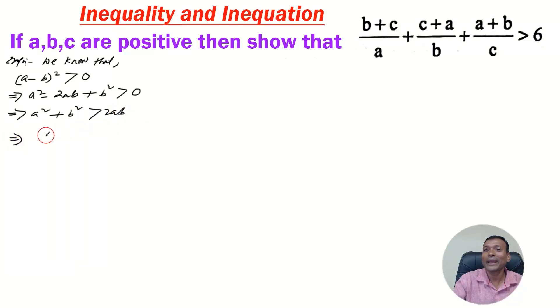Now, dividing by ab, a square plus b square by ab divided by 2ab by ab. Dividing both sides by ab, this ab cancels. a square by ab plus b square by ab is greater than 2. Since a square by ab is a by b and b square by ab is b by a, here I got a by b plus b by a is greater than 2. Let it be equation 1.